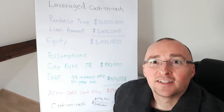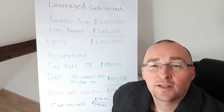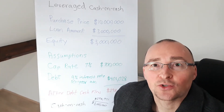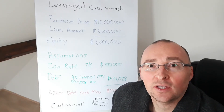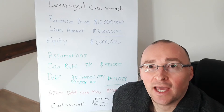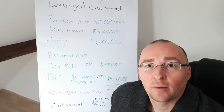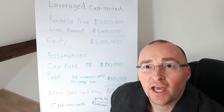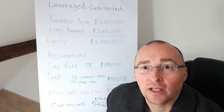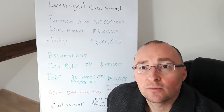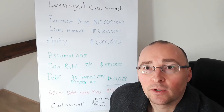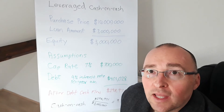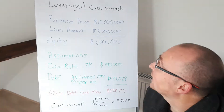Hi, welcome back. Today we are going to discuss leveraged cash-on-cash returns. Leveraged cash-on-cash returns are calculations showing the annual cash return from property operations and debt service as a ratio of how much equity has been invested in the property. Leveraged equity assumes that a property is financed with debt. Here we're going to go through an example of what a leveraged cash-on-cash return would look like.